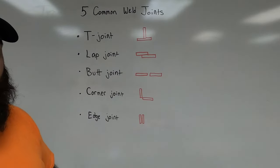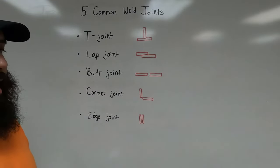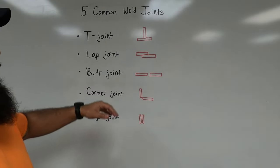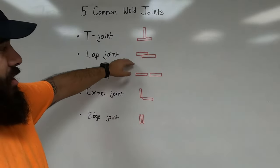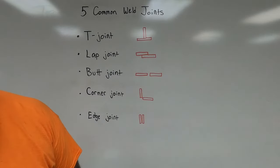There are a lot of different things that go into a welding symbol, but at its basic foundation we always start with one of the five welding joints.